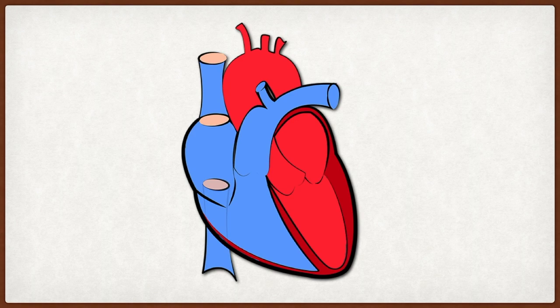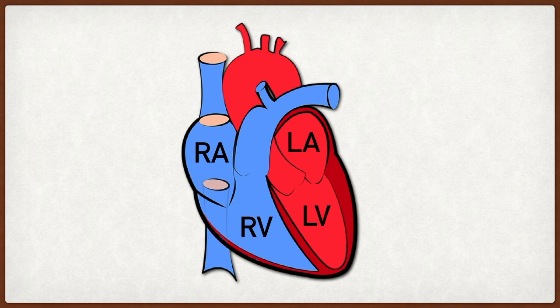As we walk through the conduction system we're going to use this heart diagram, so let's first label the anatomy. There are four main chambers: the right atrium, right ventricle, left atrium, and left ventricle. The atria sit at the superior upper portion of the heart and the ventricles at the lower inferior portion. We also have the superior and inferior vena cava — the main veins that deliver venous blood from the body back to the right atrium.